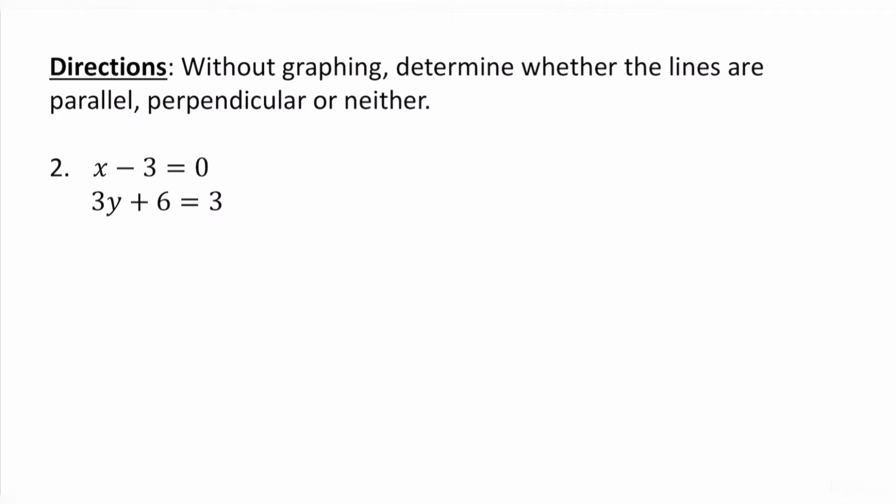Again, determine without graphing whether the lines are parallel, perpendicular, or neither. In the first one, we have x minus 3 equals 0. I've done plenty of videos that I'm going to link in the description below where I talk to you about vertical and horizontal lines. Because I see x minus 3 equals 0, and there's absolutely no y, so this is a vertical line right now at x is equal to 3.